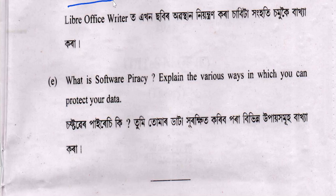Explain briefly the four settings that control the positioning of an image. I have already explained this in Part 1 and Part 2. The four settings are: Anchoring, Arrangement, Alignment, and Text Wrapping. These tools control the image position within the document.